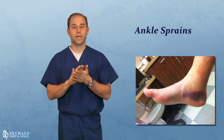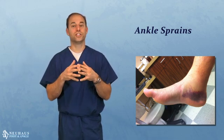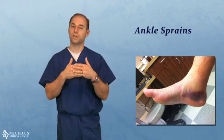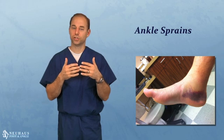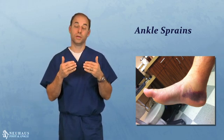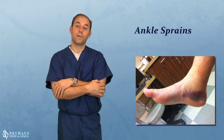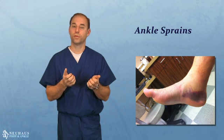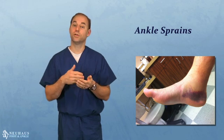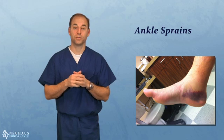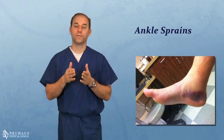So when you have an ankle sprain, you're tearing one of the ligaments. When they heal back in, they can often heal in a lengthened position, meaning they will have some scar tissue in them. They can be a little bit weaker and may not be as tight or as strong as they were before the initial injury, so you can be more prone to recurrent sprains or having a weak ankle. However, that can be prevented with aggressive treatment.